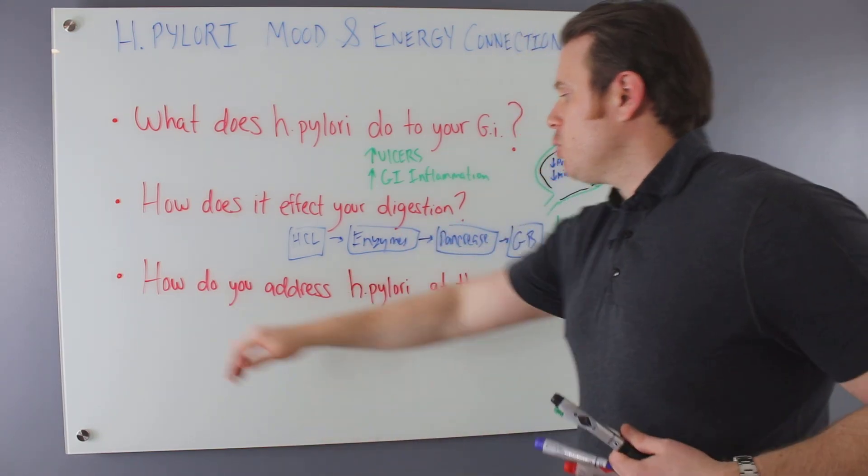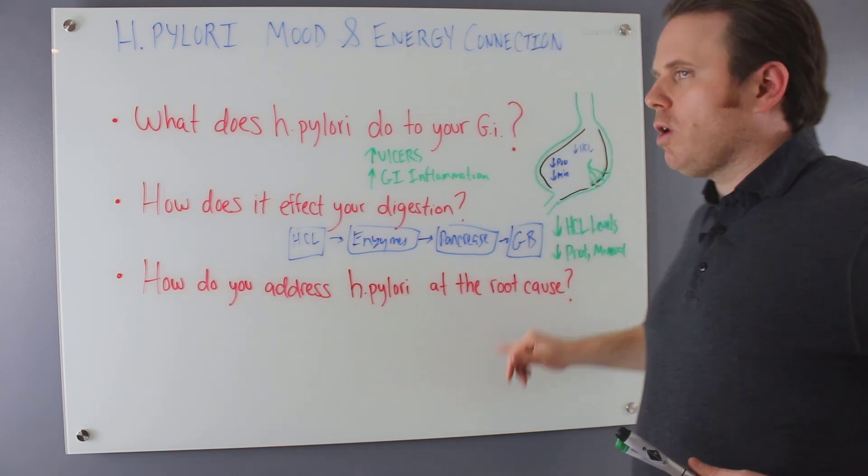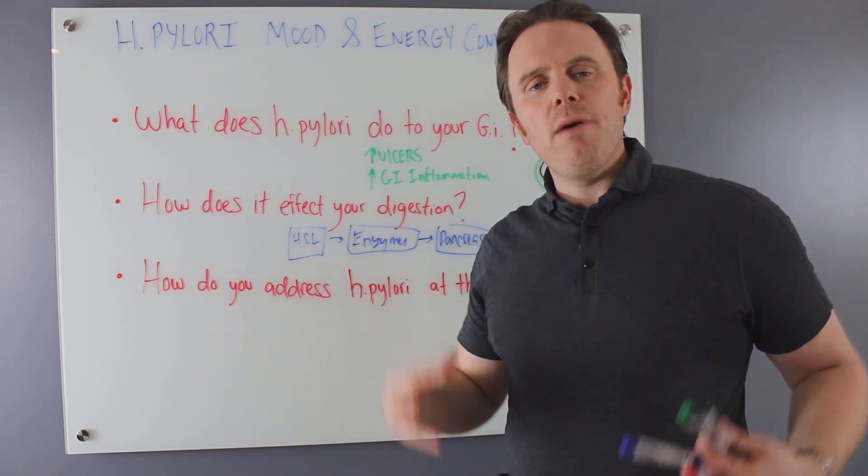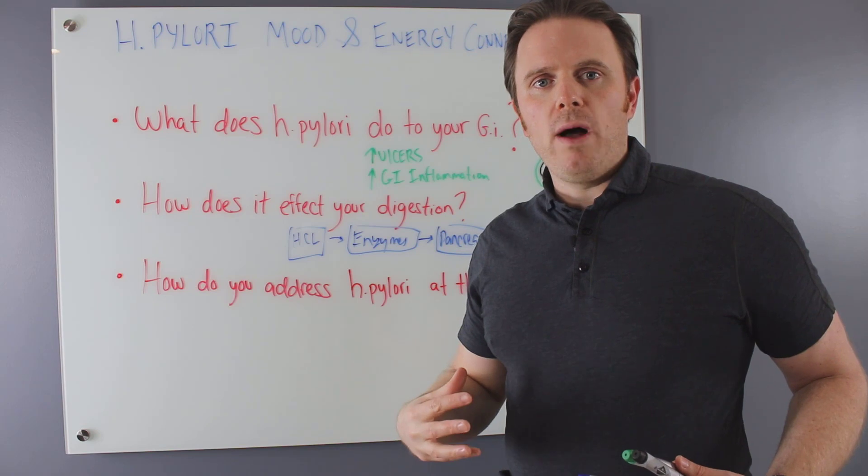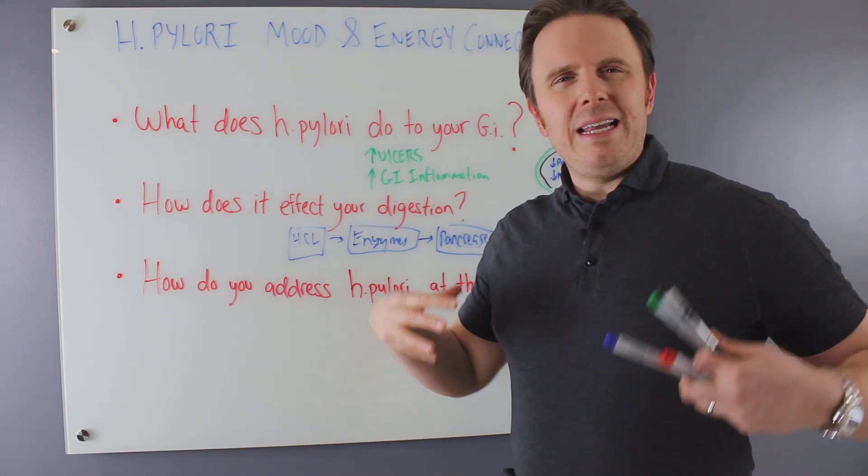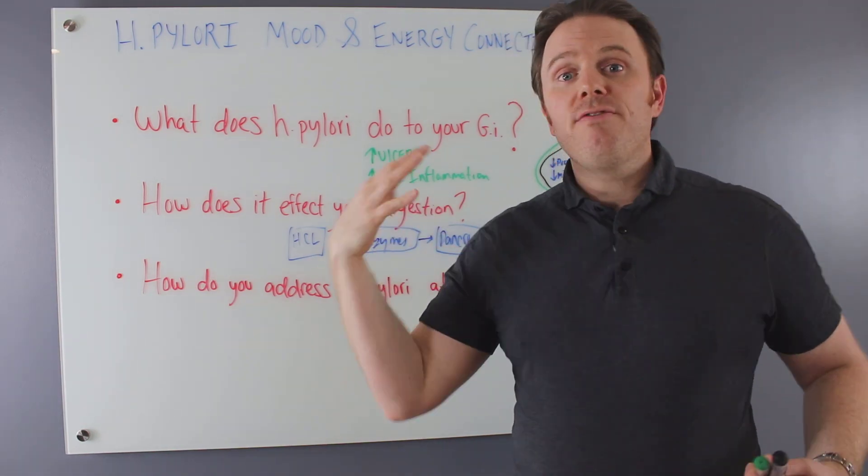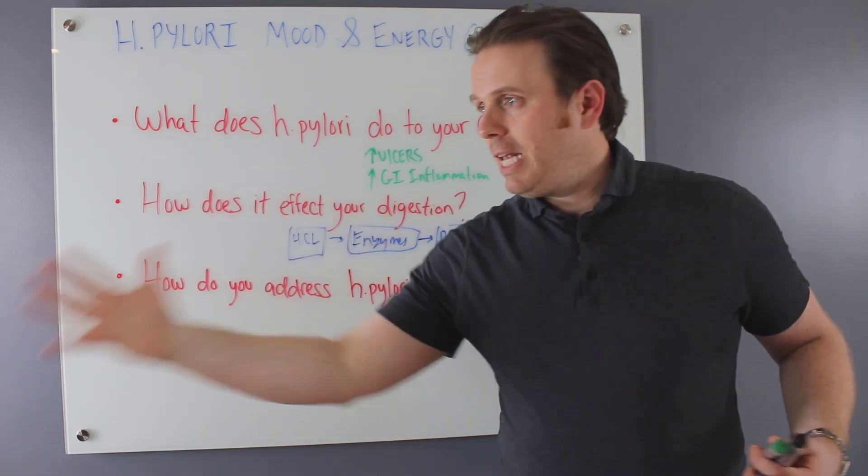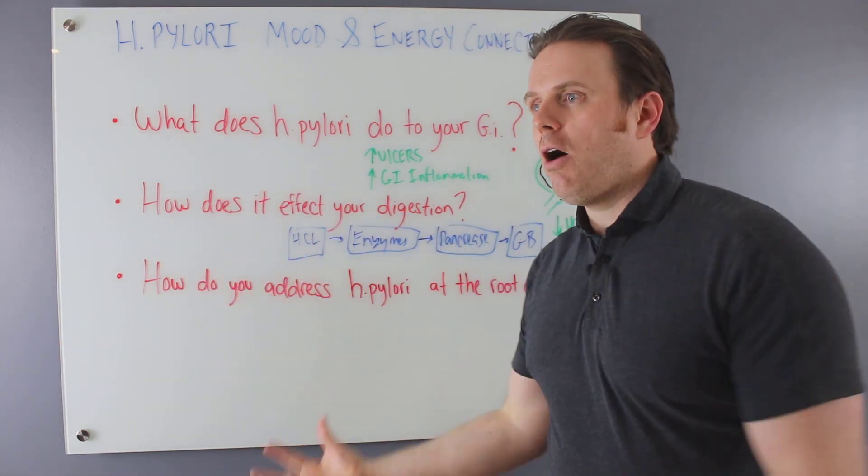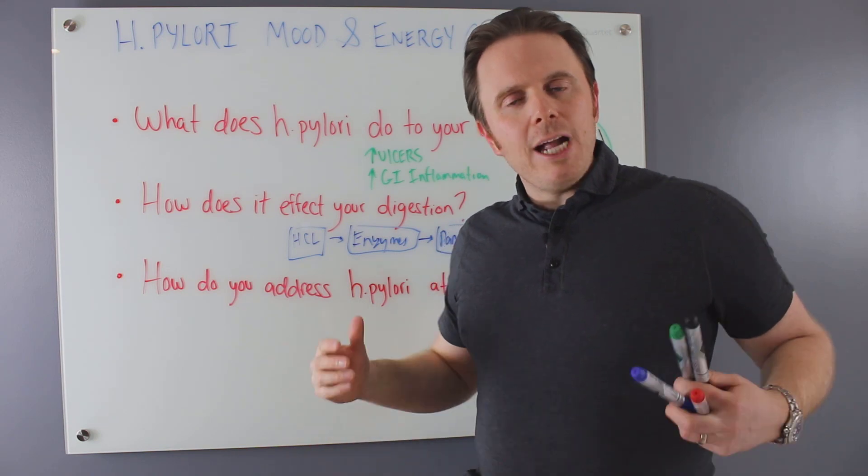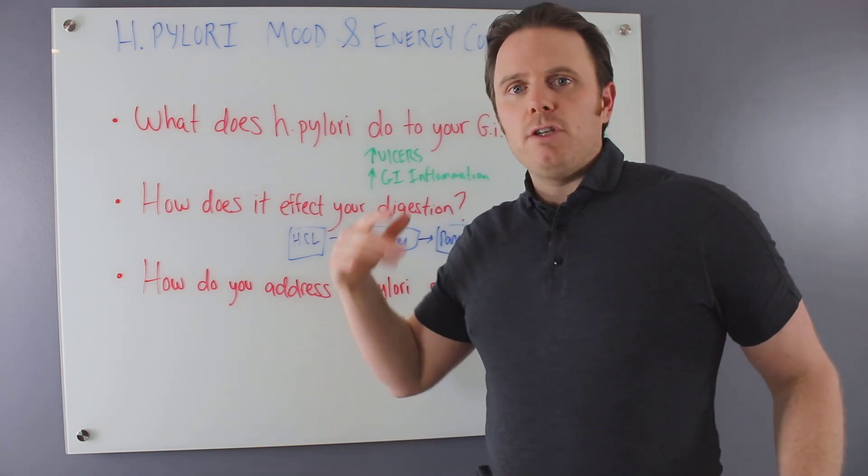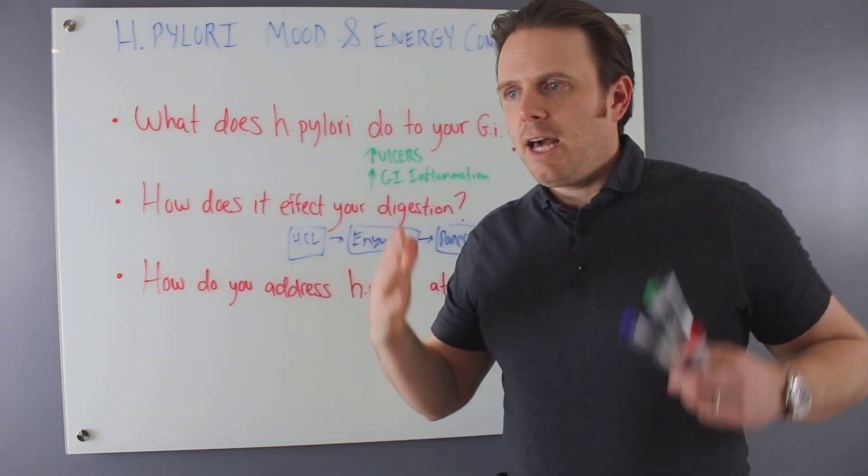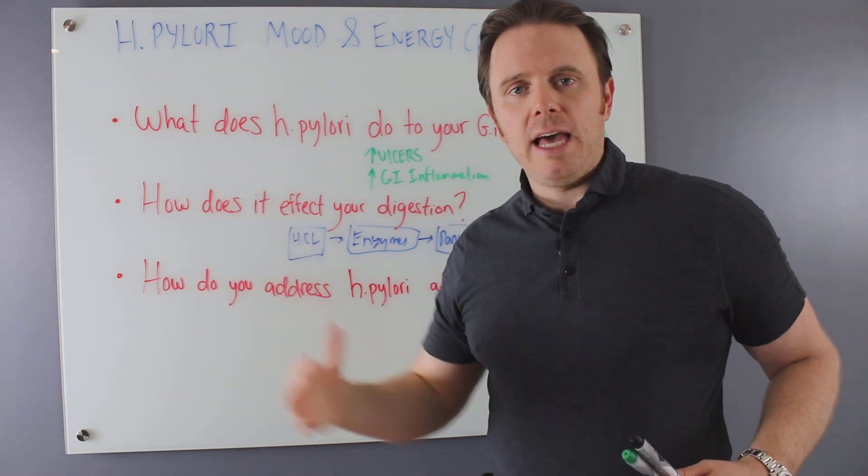So you can see. So how do you address H. pylori at the root cause? Number one is you have to cut the inflammation down with your food as well. A lot of people, we're kind of in this antibiotic age where you have an infection, it's strep throat, it's staph, here's an antibiotic. They don't look at how that infection came to be. So with H. pylori, we have to address the food issue. Cut out the inflammatory foods that could be leading to that.